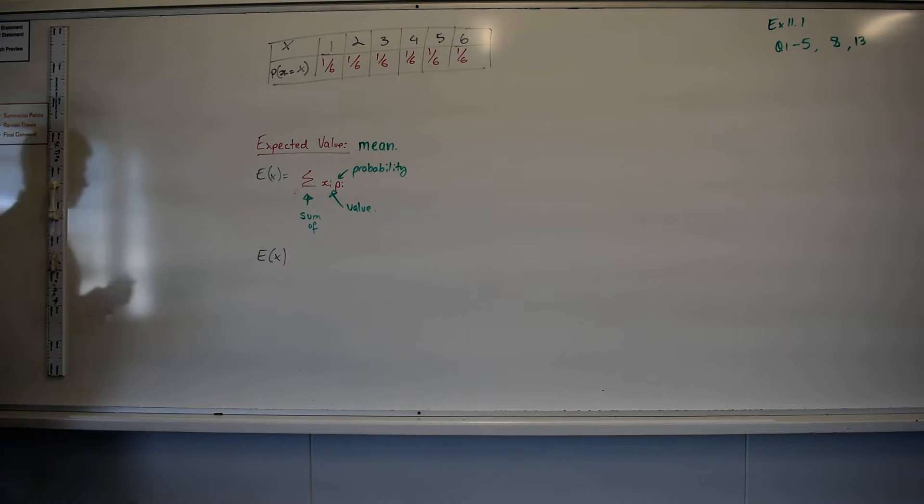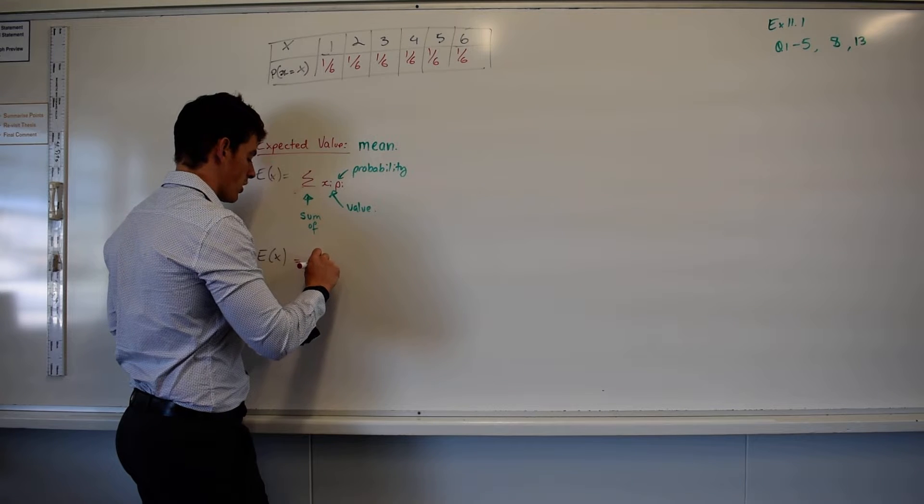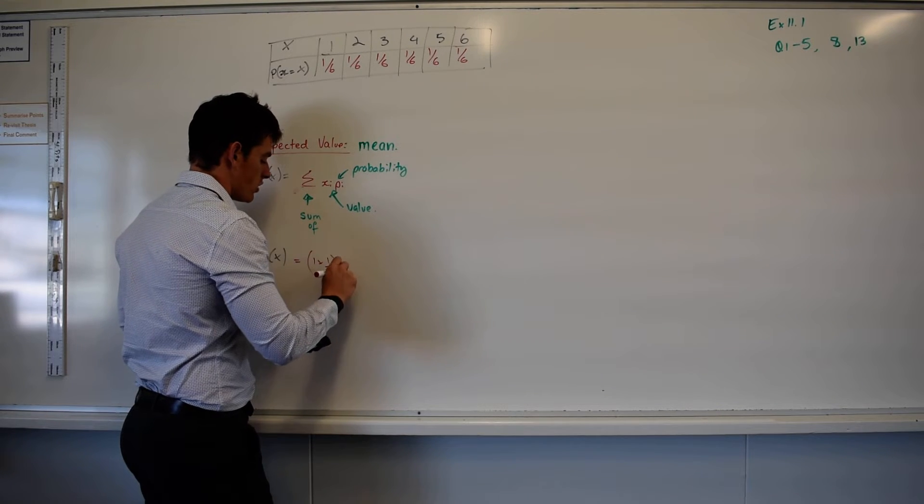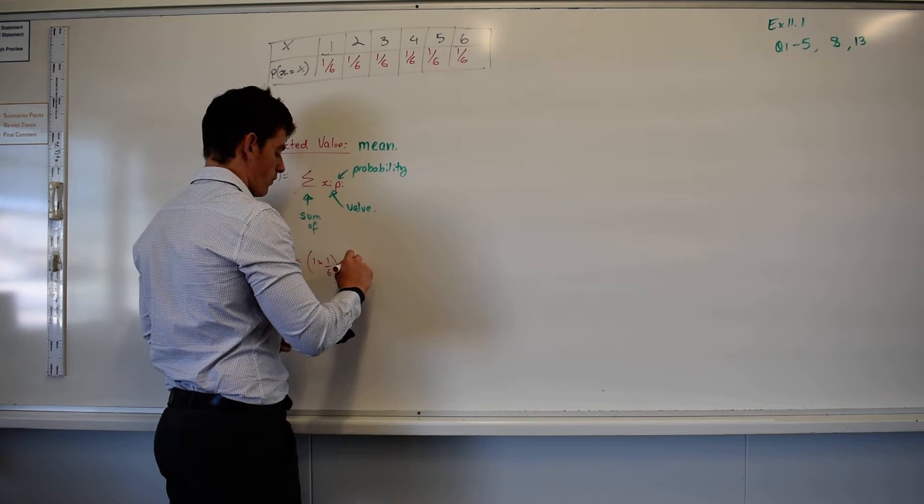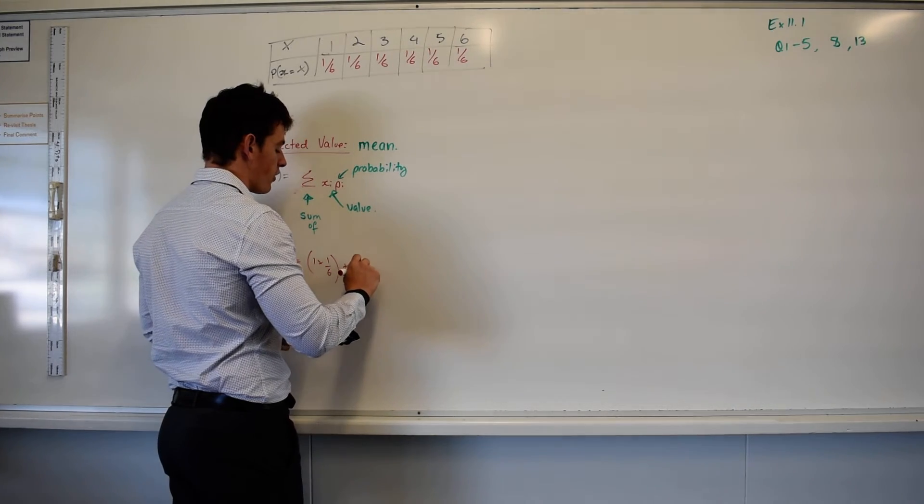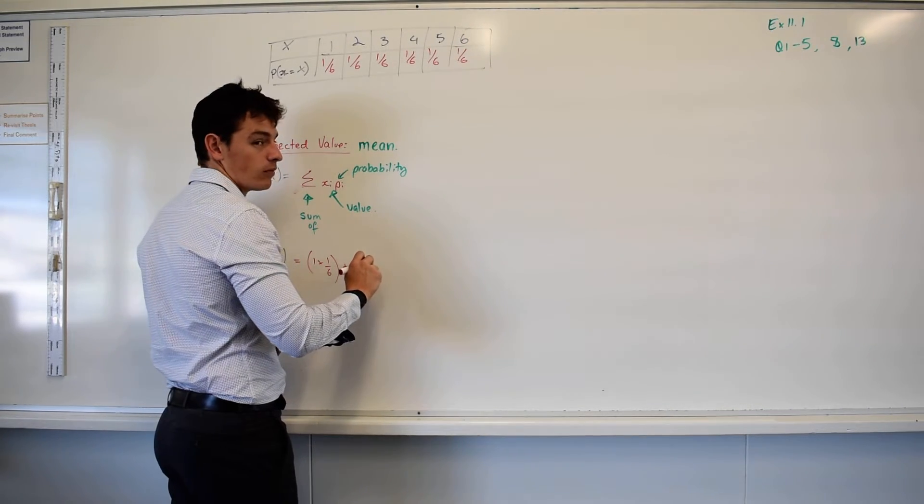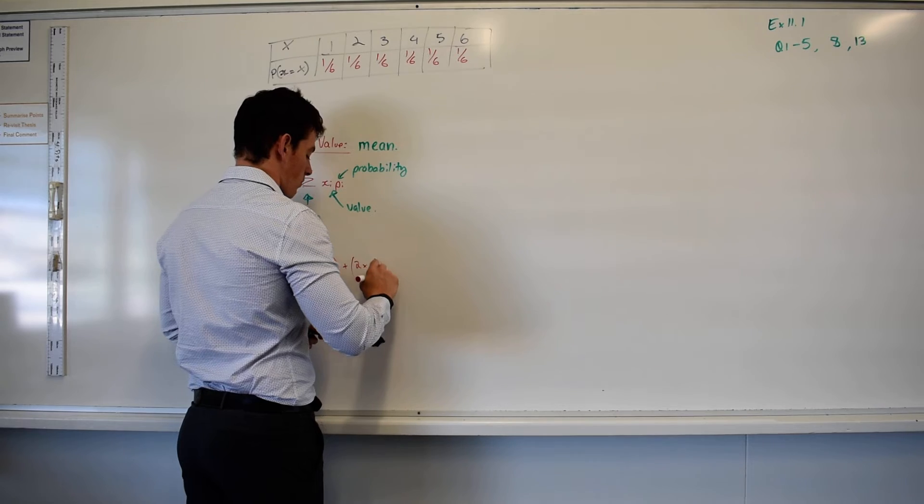So if I wanted to find my expected value here, and we signify that with E(X), my expected value needs to equal the sum of my score multiplied by my probability. So what's my first score? One. So it's 1 times 1 out of 6. What's my second score? Two. What's the probability of it occurring? 1 out of 6.